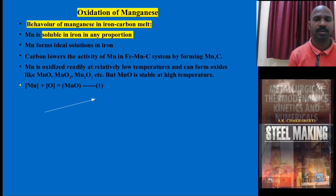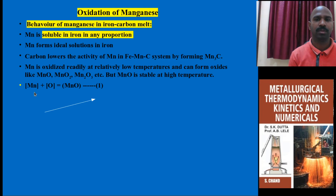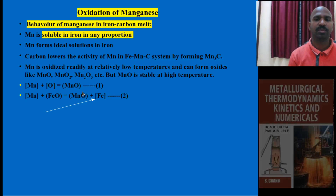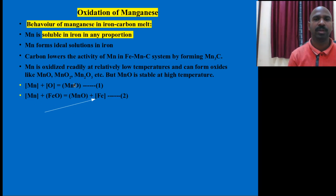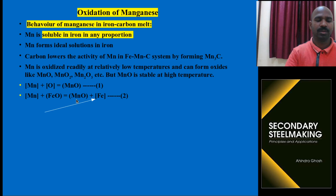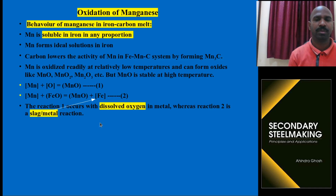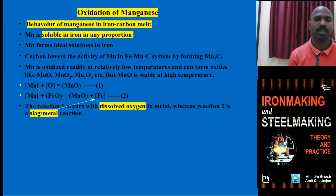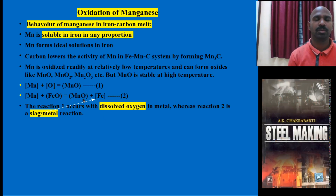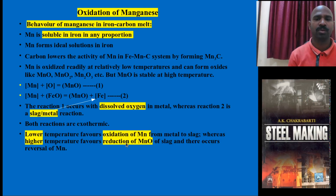Molten metal manganese and dissolved oxygen react and MnO goes out as slag form. In another situation, MnO slag reacts with Mn in the molten metal via FeO and forms MnO again. This results in a loss of iron as well. This reaction involves oxygen dissolution, and it is a metal-slag reaction. How do you deal with these things?